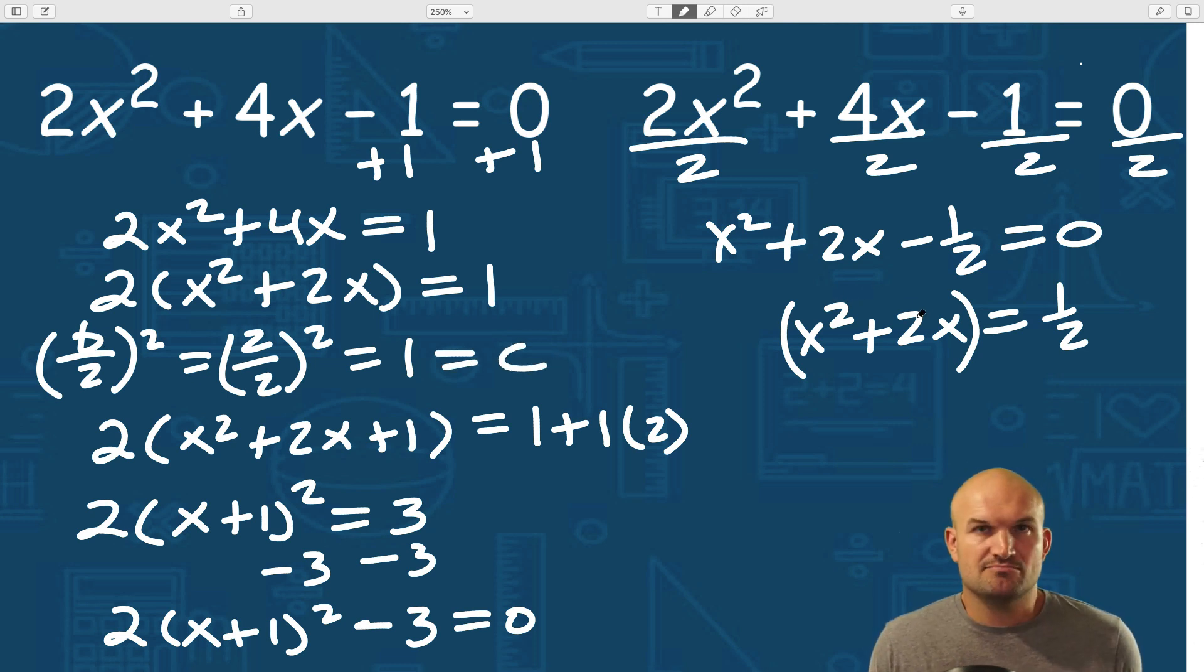Well, again, we already did this. Two divided by two is one. One squared is one. So in this case, all we're going to do is add a one to the left side, as well as add it to the right side.